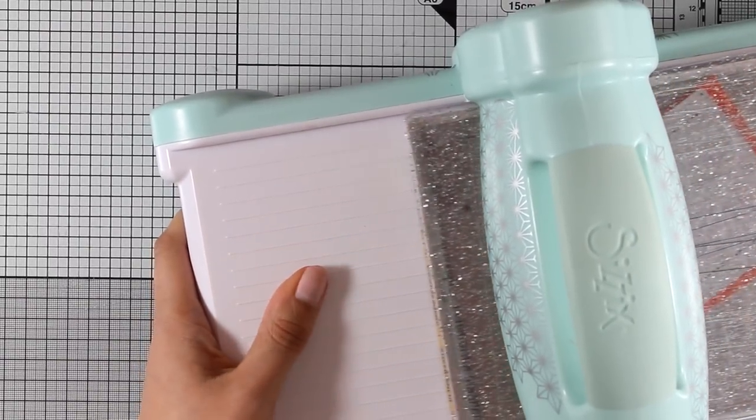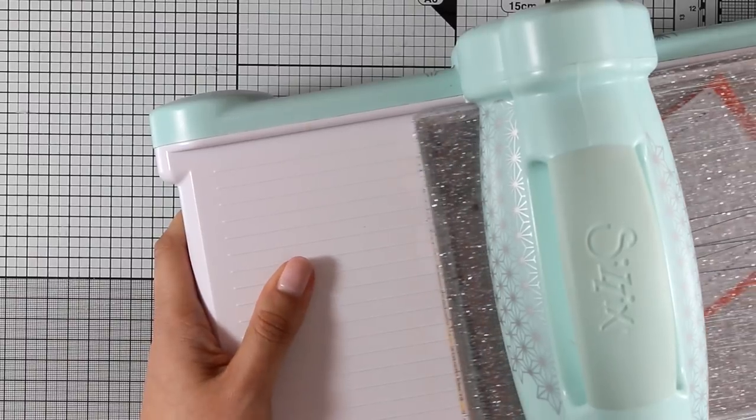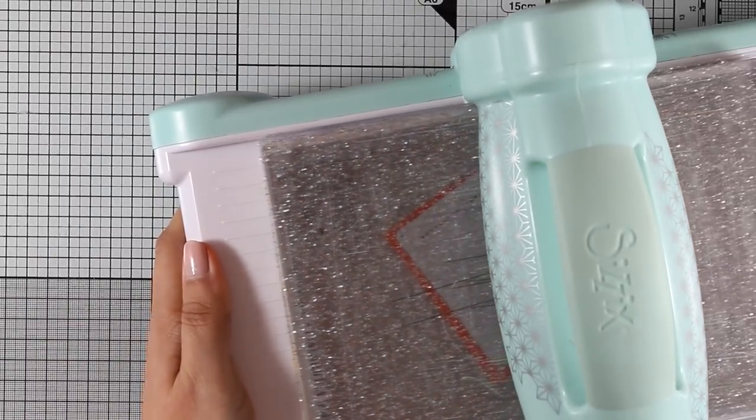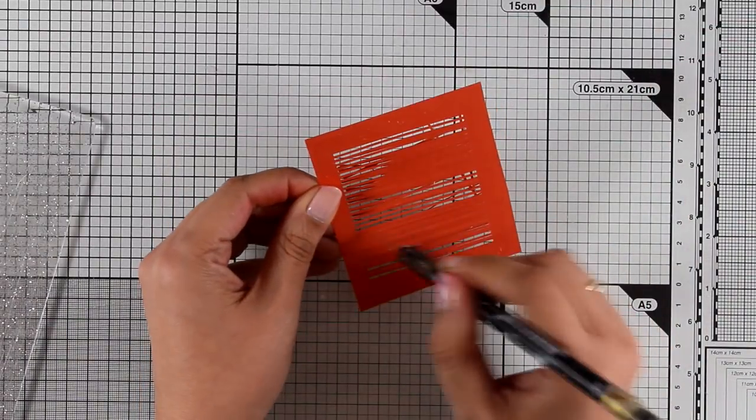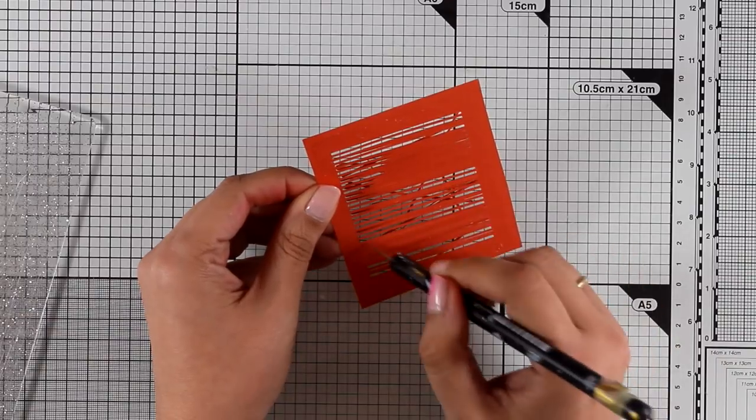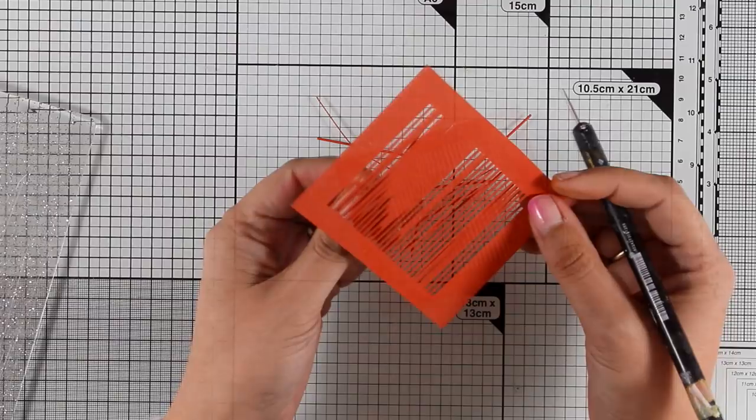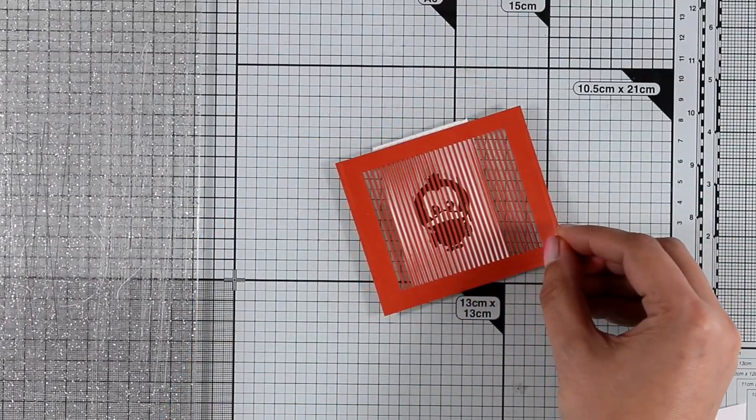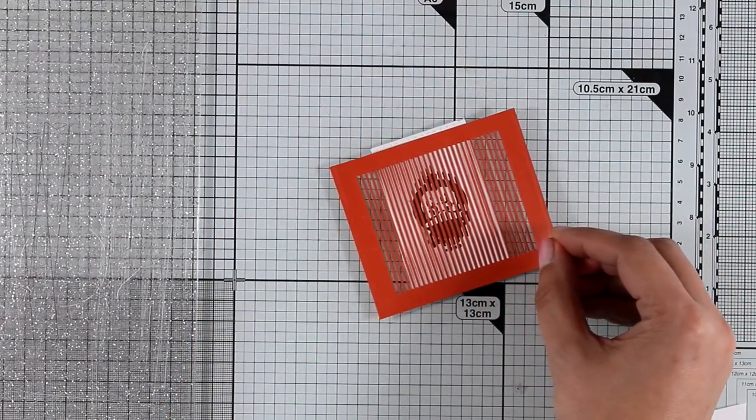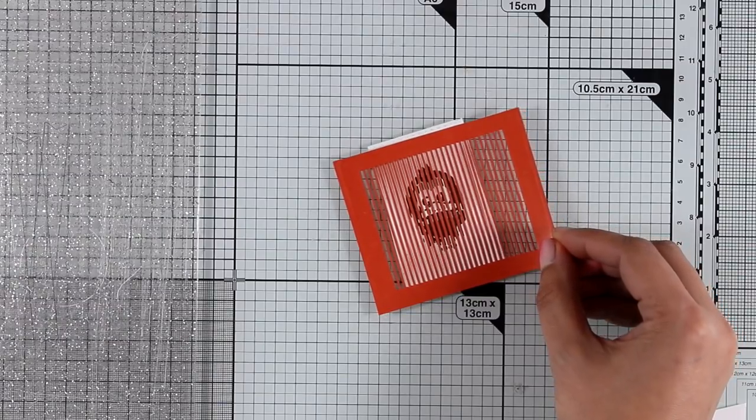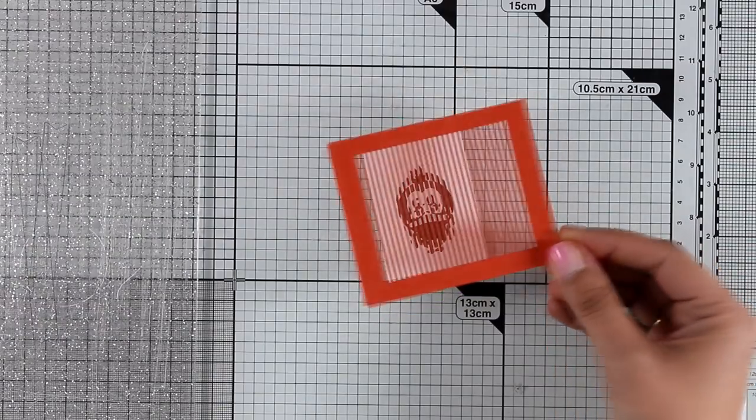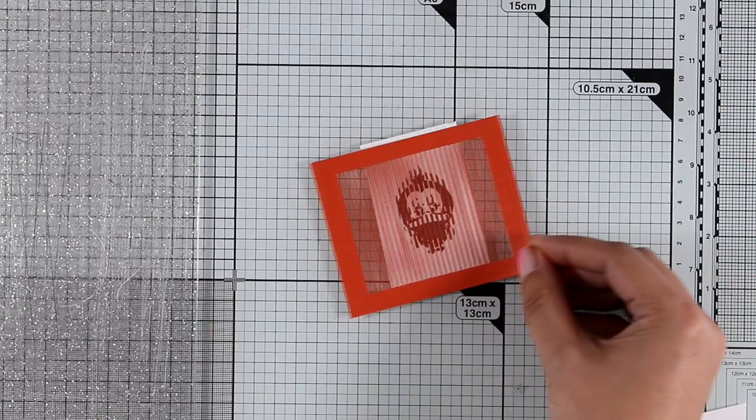Make sure that you use the precision platform if you're going to cut it out with your Sizzix machine, or a metallic shim like I'm using here. This will make sure that it cuts nicely. I'm passing it through a couple of times. This is a very intricate die, so you need to make sure everything cuts out nicely.